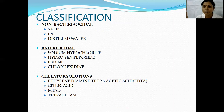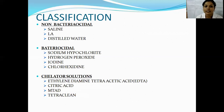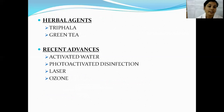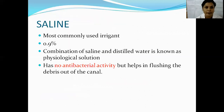Bactericidal irrigants include sodium hypochlorite, hydrogen peroxide, iodine, as well as chlorhexidine. Chelating solutions include EDTA, citric acid, NTA, tetra-clean, etc. Herbal agents include triphala and green tea. Recent advances in irrigation include the use of activated water, photoactivated disinfection, laser, as well as ozone.